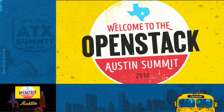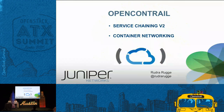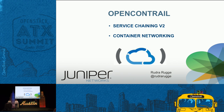Hi everyone, I'm Rudra Rokeh, part of the Contrail team. Today I'm here to present a couple of new things we've introduced in the open Contrail solution. The first one is Service Chaining Version 2 — a new way to do physical, virtual and container-based services. We're also working on container networking with Kubernetes, Mesos, and other solutions, and how to plug open Contrail into all of those.